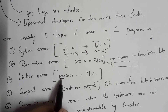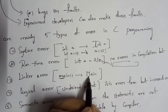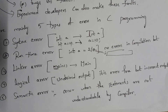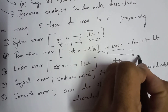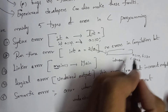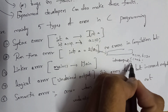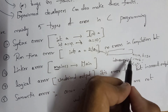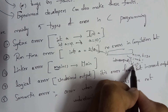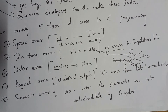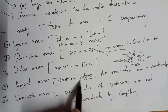The third type is a linker error. In the main function, 'm' should be lowercase, but if you write 'Main' with a capital 'M', it is considered a linker error. The fourth type is a logical error. During compile time and runtime, no error is displayed, but the output is wrong. For example, if a = 10, b = 20, and c = a + b, but instead of printing c you print a using 'printf("%d", a)', you will get 10, which is the wrong answer. Beginners commonly make logical errors and get incorrect output.